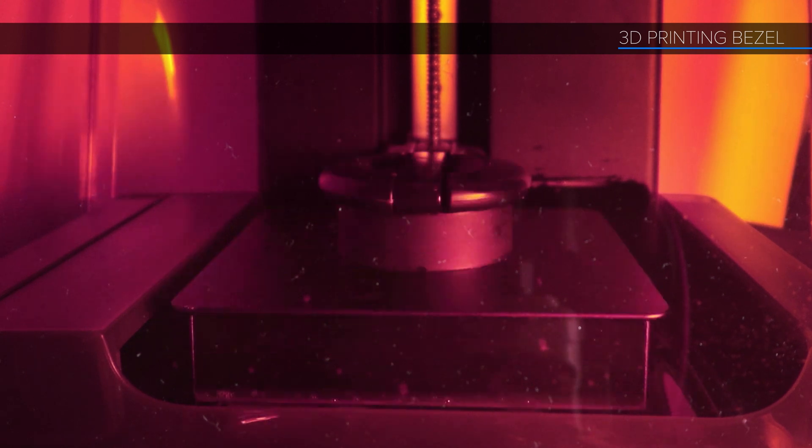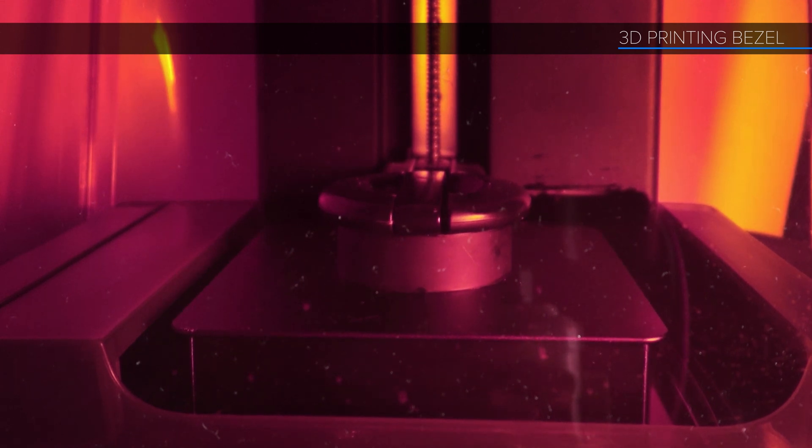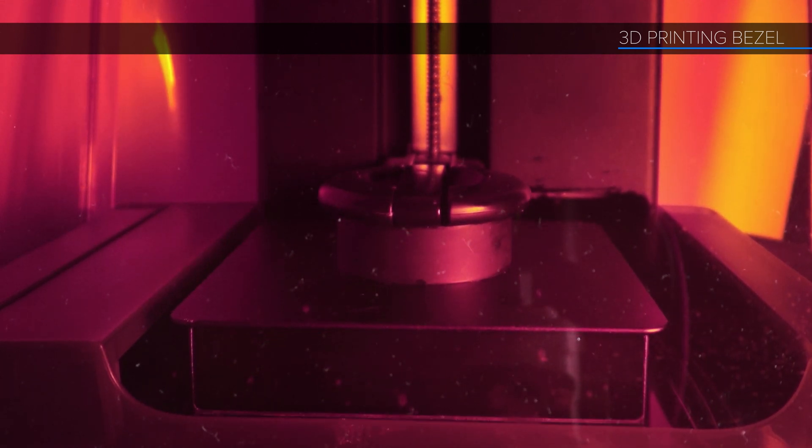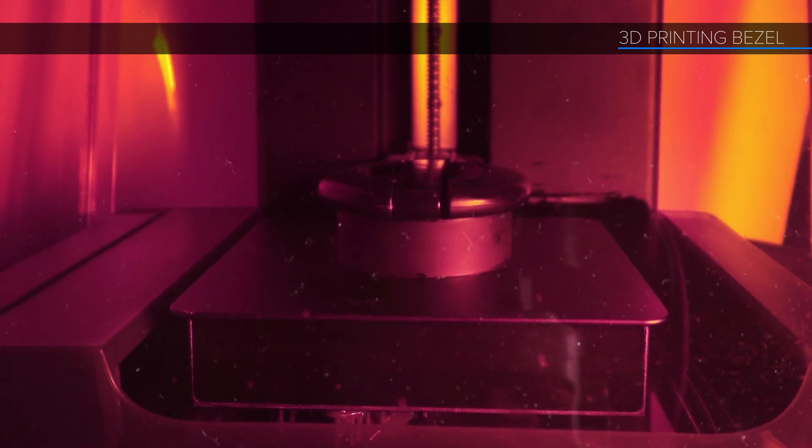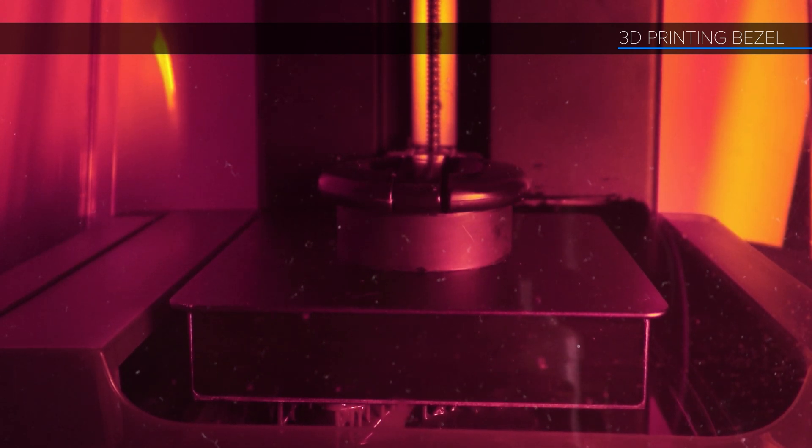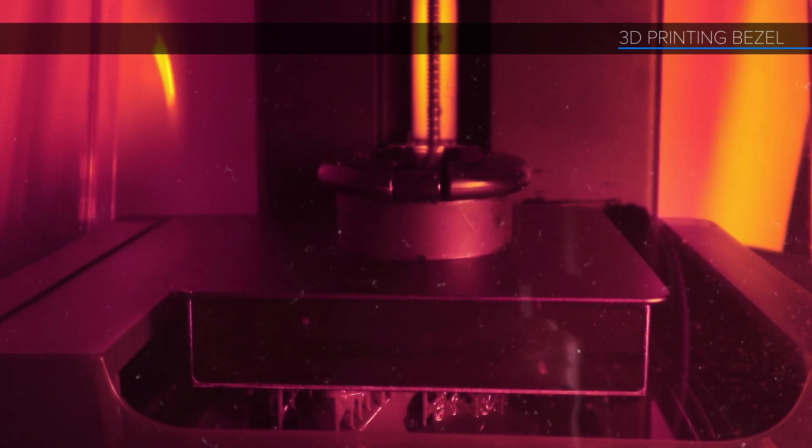In any case, with the layouts taken care of, it's time to print. These parts are going to be printed in Formlabs Tough 2000 resin, which has mechanical properties similar to ABS plastic. It's fairly rigid but with good flex attributes, so if parts get dropped, they are less likely to shatter. This resin also cleans up pretty well and is less likely to chip if I need to sand or dremel it out in places.